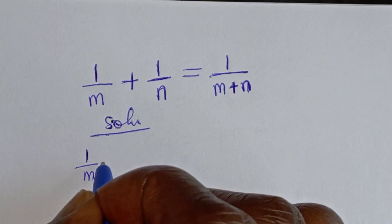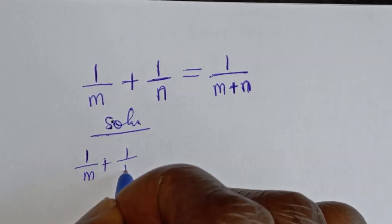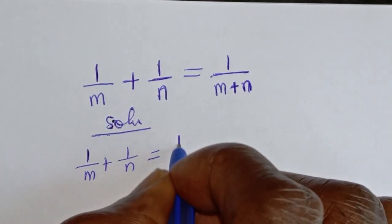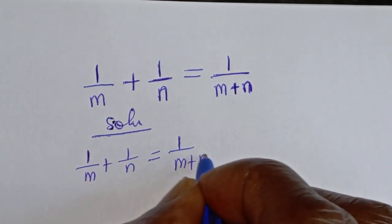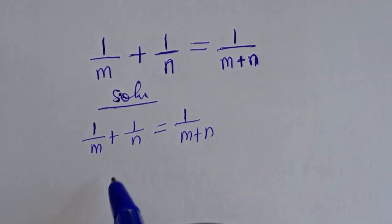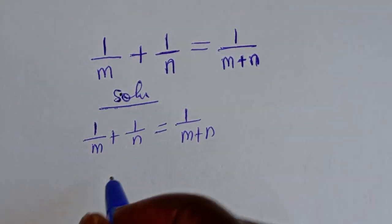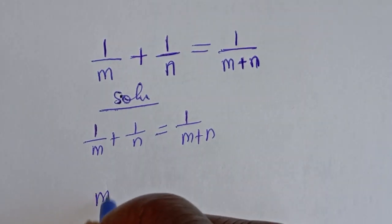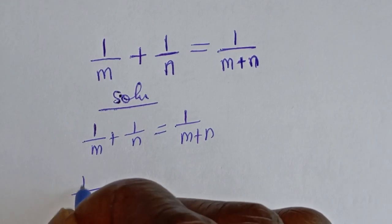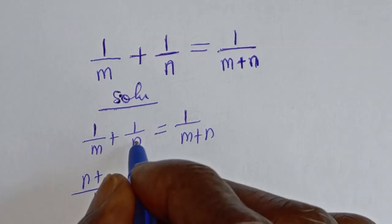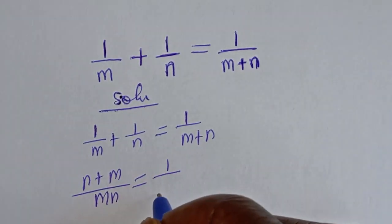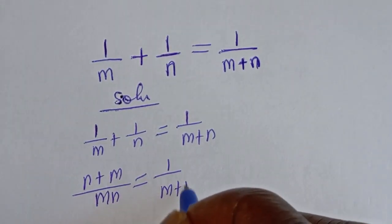1 over m plus 1 over n is equal to 1 over m plus n. Now, what do we do for starters? Let's find the LCM of the left hand side. The LCM is mn, then this divided by this you have n plus this divided by this m is equal to 1 over m plus n.